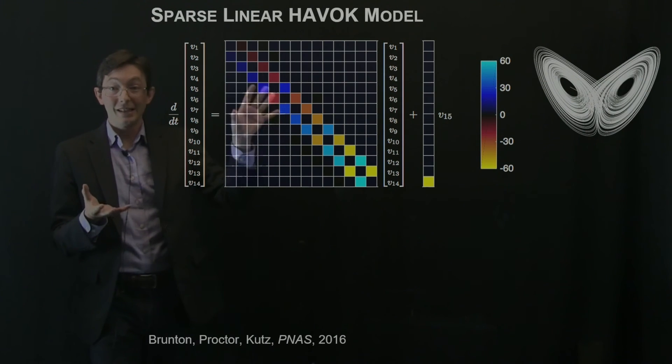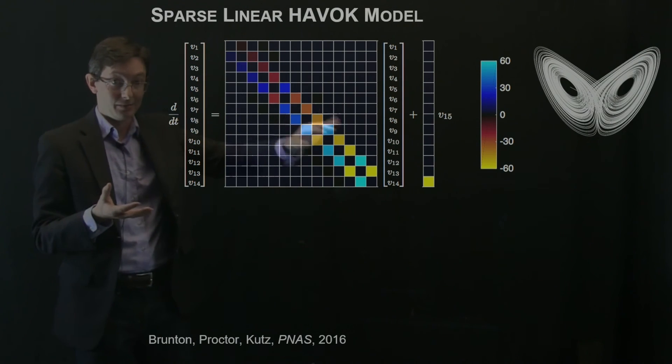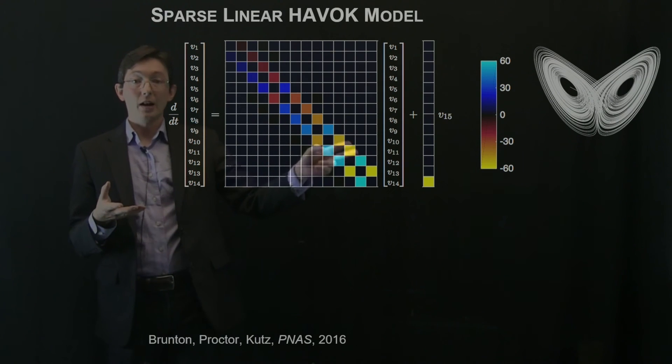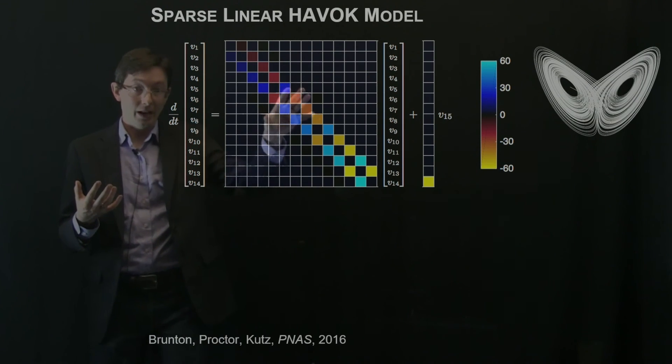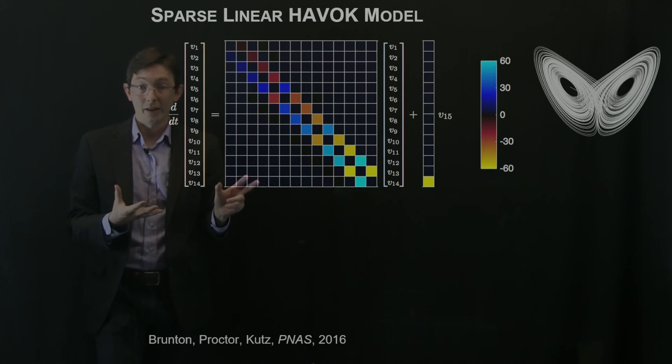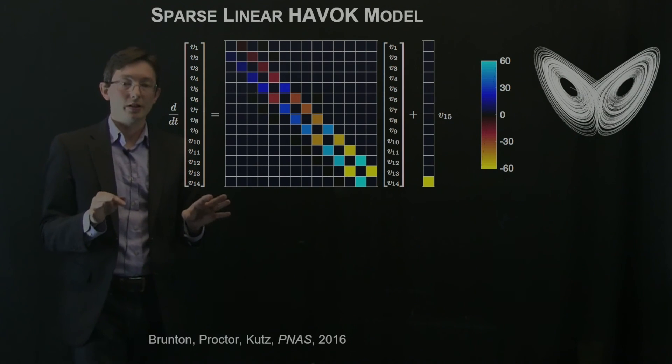For the Lorenz data, this is actually the model that we get out. This is in MATLAB. I'm plotting the coefficients. The color indicates the coefficient of this model. This is my A matrix, my B matrix of my linear HAVOK model for Lorenz. This is very cool. Lots of neat structure here.